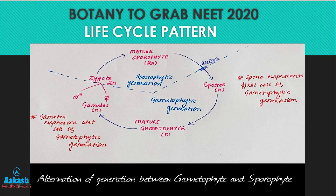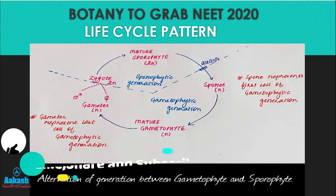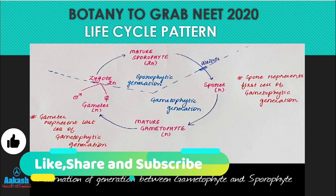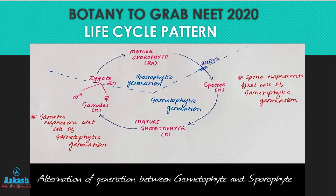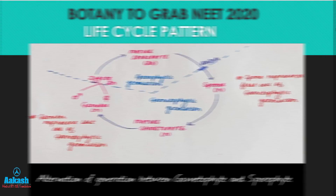Meiocyte refers to any cell that undergoes meiosis. The cell that produces gametes is known as the gamete mother cell, and this process of gamete formation is known as gametogenesis. Similarly, the cell that produces spores is called the spore mother cell, and the process of spore formation is called sporogenesis.